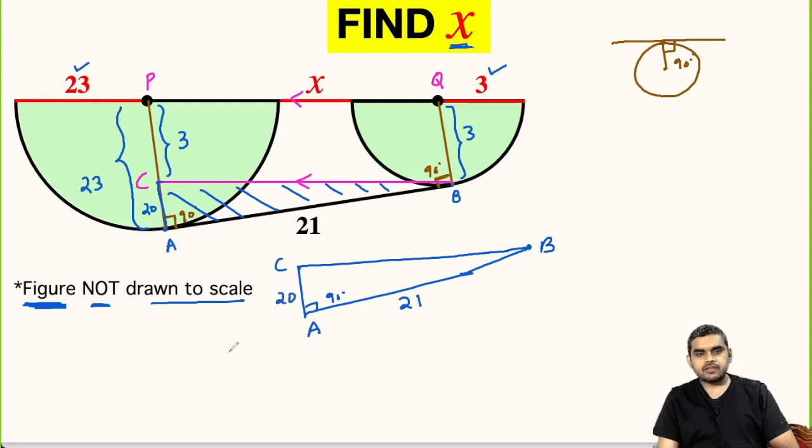AB is given as 21 units. AC we found as 20 units. And BC will be the hypotenuse, so we do not know its value.